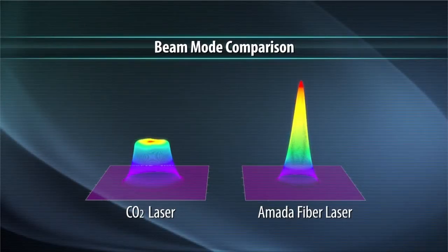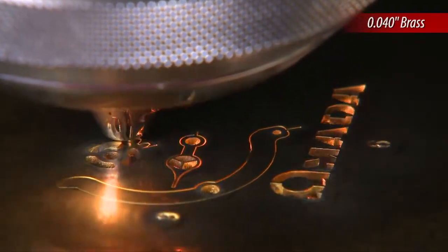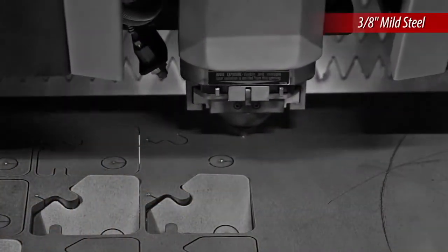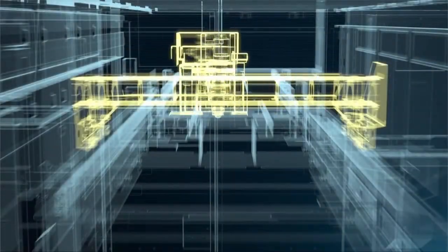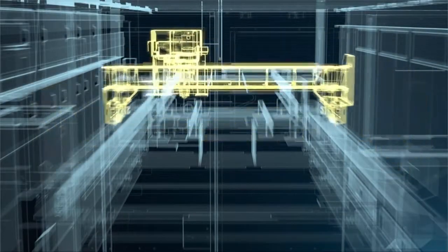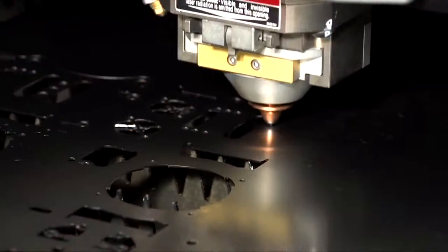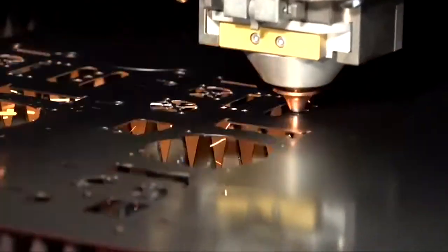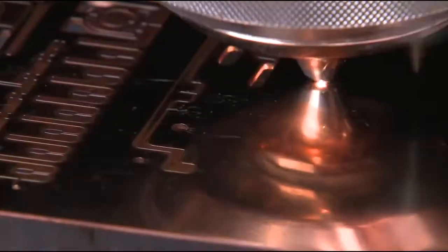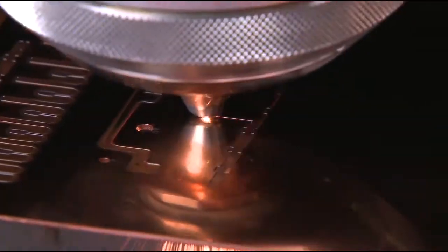The LCG-AJ utilizes a modest proven fiber laser technology that allows a variety of material types and thicknesses to be processed efficiently. An innovative motion system and advanced structure design allow the LCG-AJ to balance cut speeds and positioning acceleration with maximum accuracy.